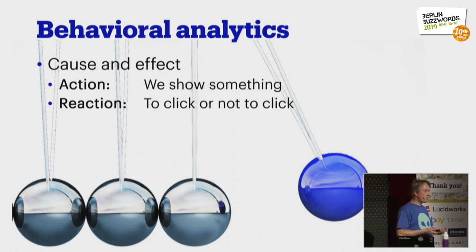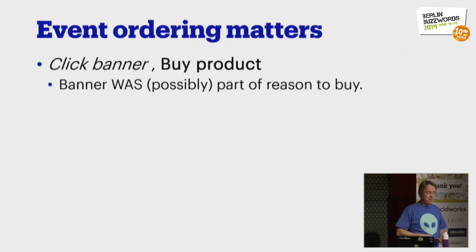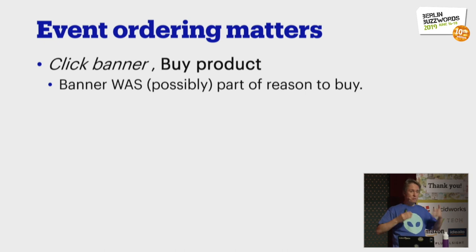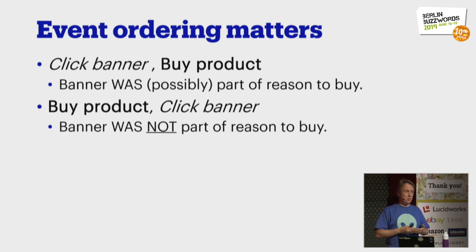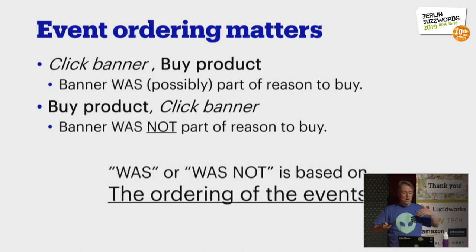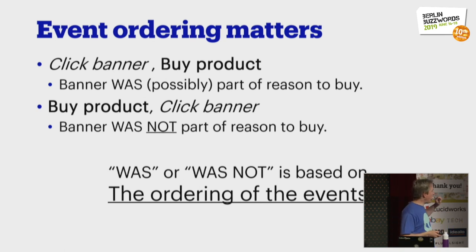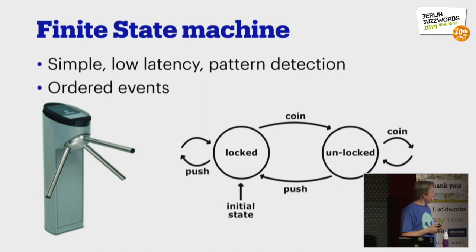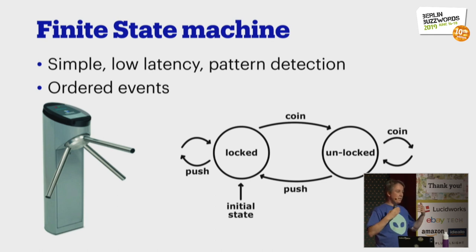In those chains of causality, ordering of events matters. If you click a banner and then buy a product, the banner is most likely part of the reason why you bought it. If the order of these two events is reversed, it was definitely not a reason for buying. The ordering of the events determines whether causation was present or not. The nice thing about having ordered events is that analyzing them — figuring out what happened — can be done with something like a finite state machine, which is very suitable for low-latency analysis and finding specific patterns in streams.